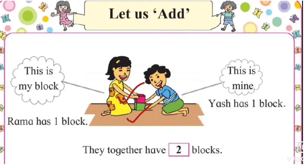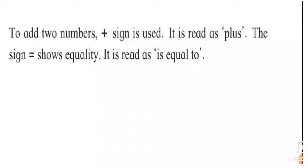They have two blocks together. Understood? Very good! Toh bacho, Rama ke paas one block hai aur Yash ke paas one block hai. Jab in dono ke blocks ikkatha karte hain to unke paas two blocks ho jaate hain. Understood? Very good!